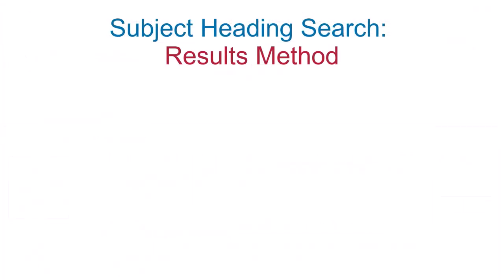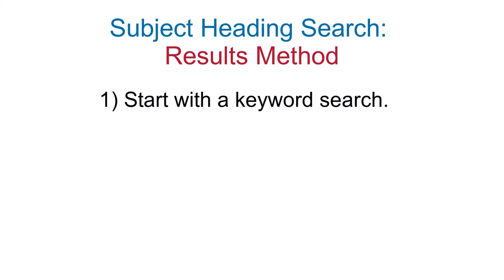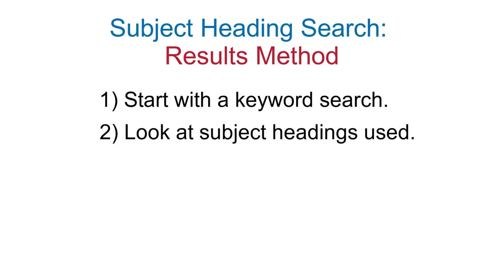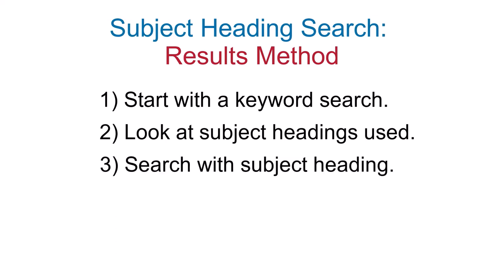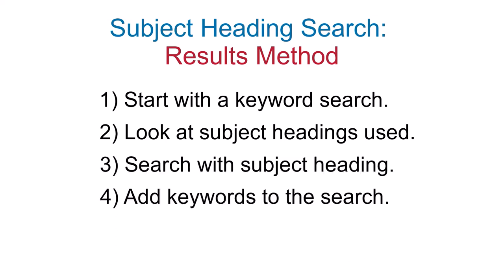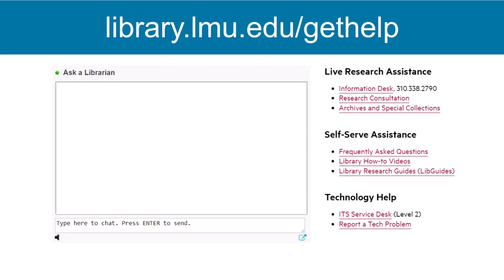To summarize, you can start searching with a regular keyword search, but pay attention to the subject headings used for relevant articles. Perform a search with those relevant subject headings, and mix in your own keywords to find the most relevant results. And remember, if you need further assistance, you can always chat with a librarian.